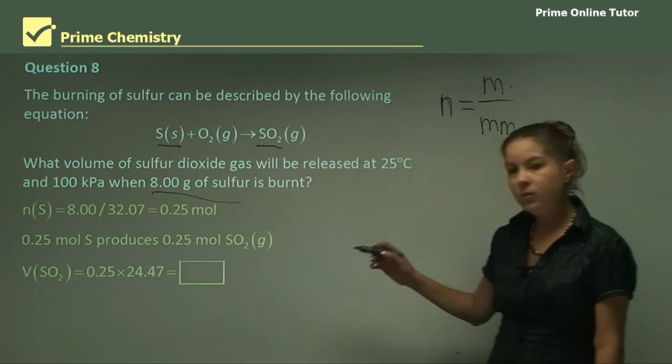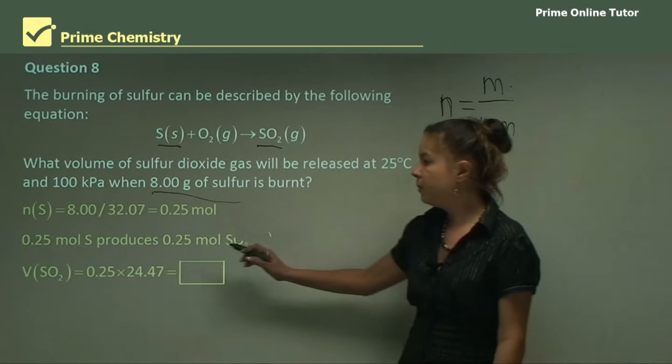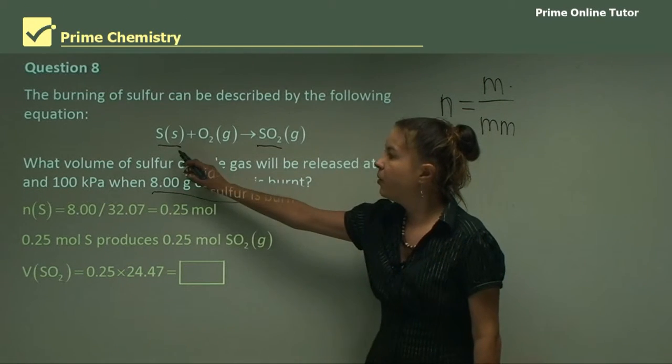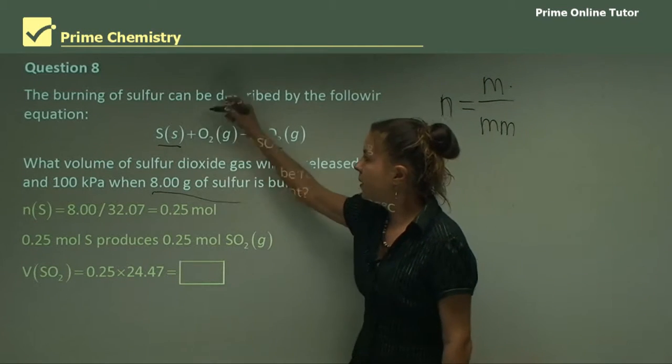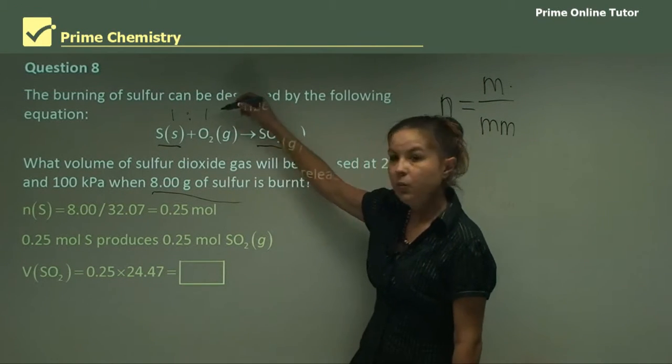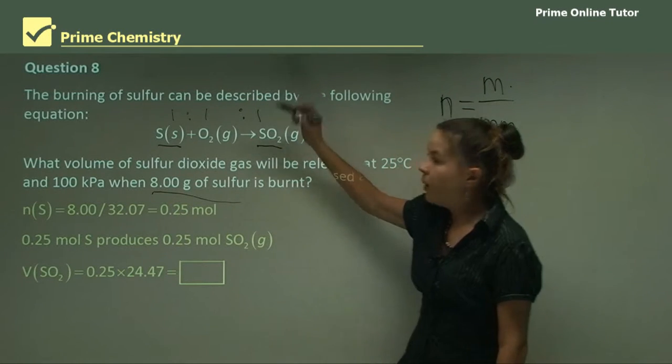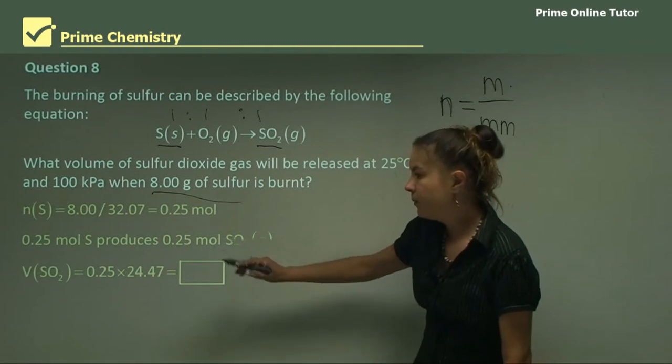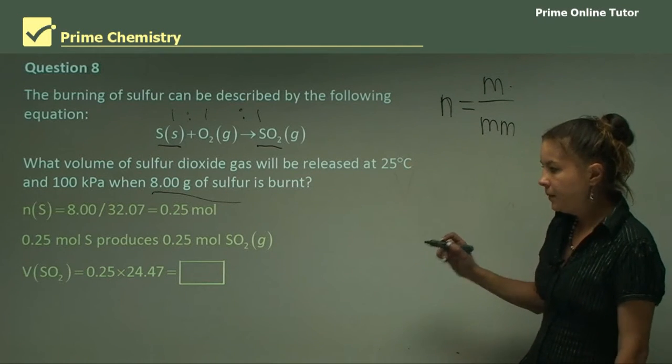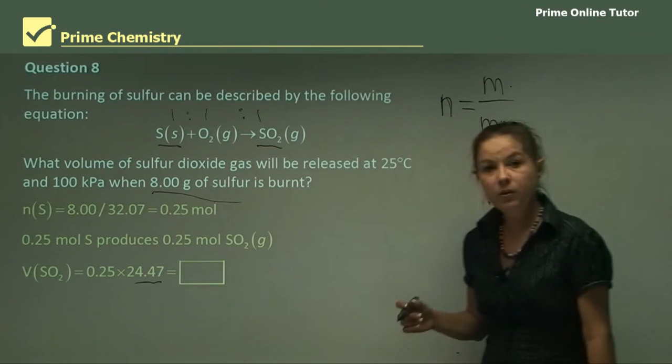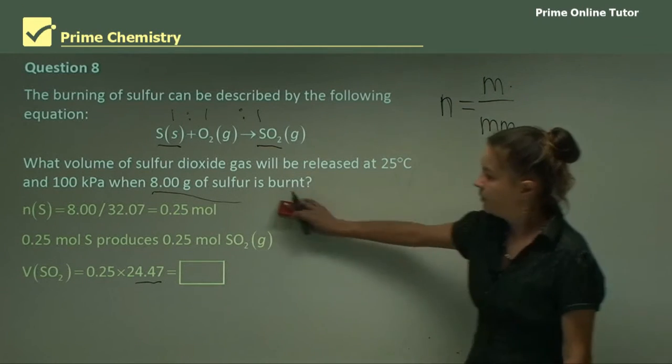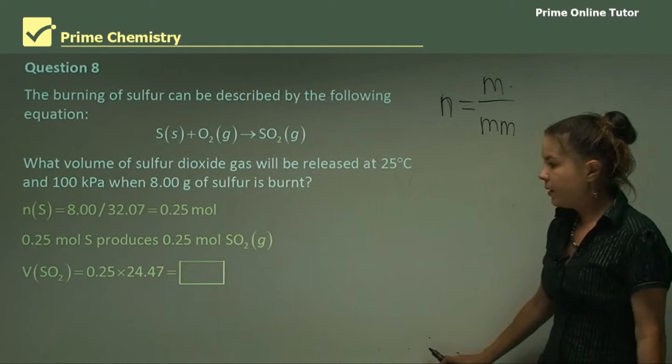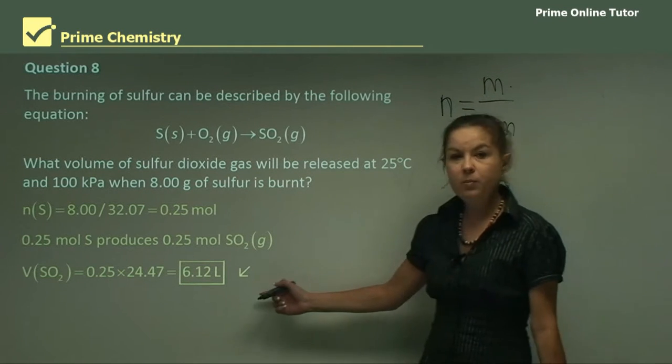And 0.25 moles of sulfur produces 0.25 moles of SO2. And we know this from the equation because we can see that it's a 1 to 1 to 1 ratio of the reactants and the products. So then the volume will be the moles times the molar volume at that temperature. So what we find is it's 6.12 liters.